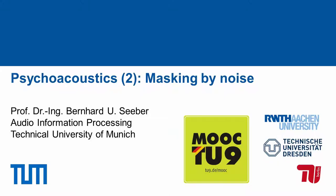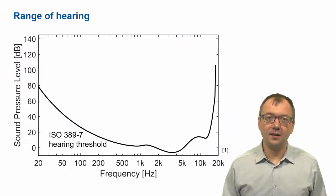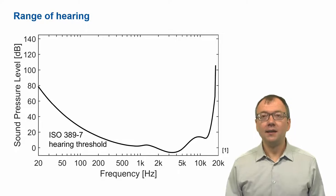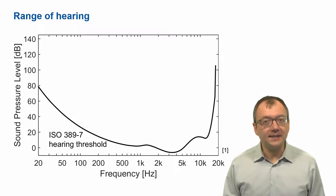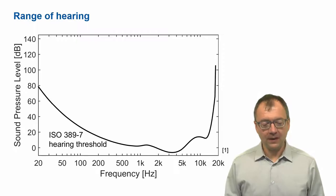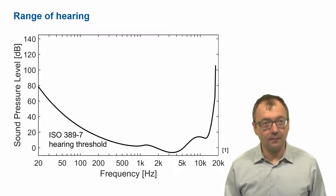Welcome to the first part of our Psychoacoustics lecture on masking by noise. I will start off introducing the range of hearing, starting from the faintest sounds that we can hear at the threshold of hearing all the way to the loudest sounds. The range of hearing is limited towards the low end by the hearing threshold, or also threshold in quiet, which gives us the faintest sounds that are just audible without any other sounds being present — the absolute lower limit of the auditory system.